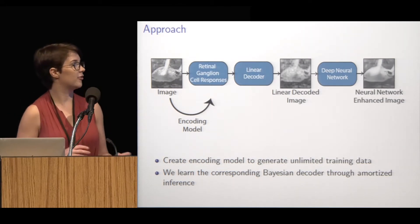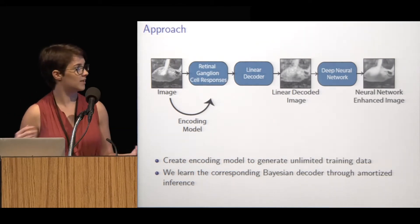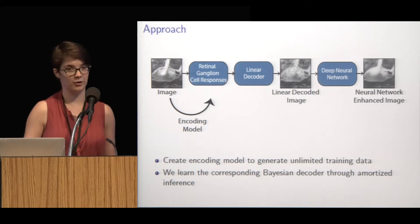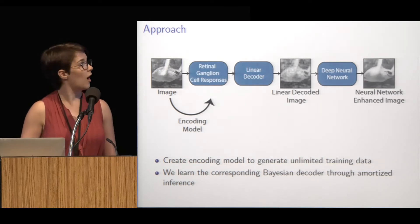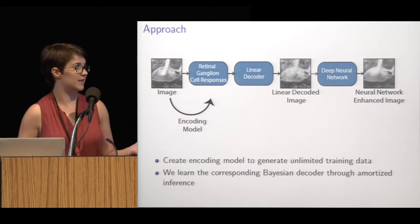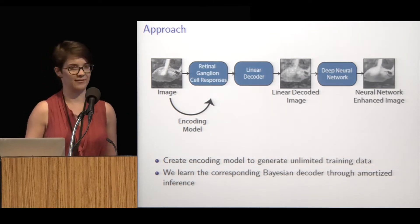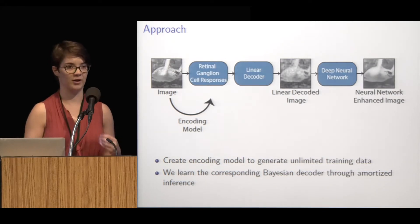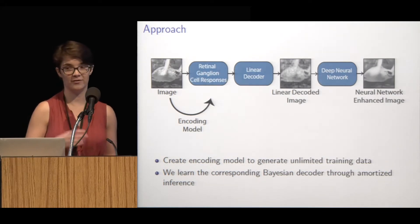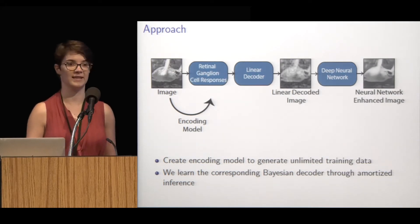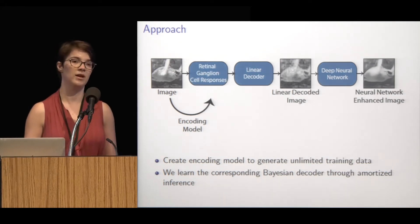Basically, we are trying to learn the corresponding Bayesian decoder for a specific encoding model through amortized inference — putting a lot of effort into the training of these models so that at test time they should run very quickly.